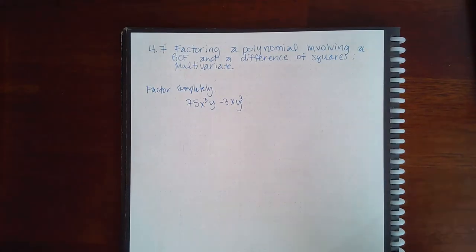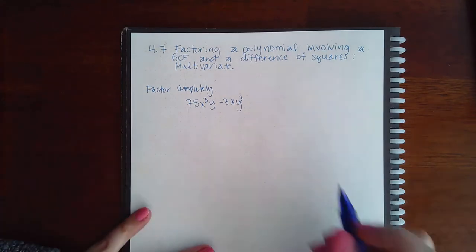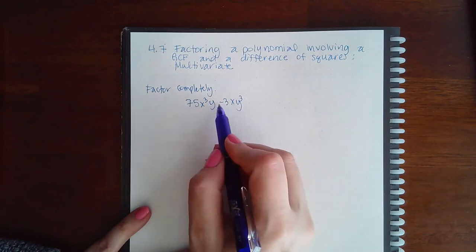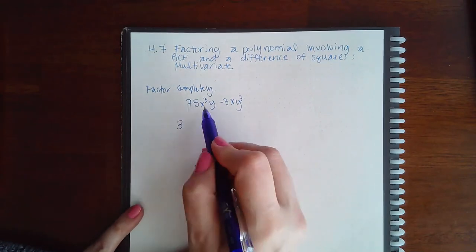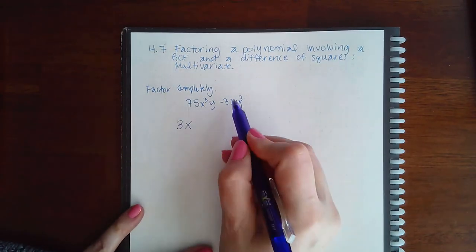Here we have 4.7, factoring a polynomial involving a GCF and a difference of squares, multivariant. Let's see what they have in common. Both of these can be divided by 3. They have an x in common.